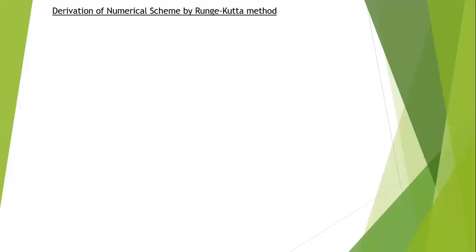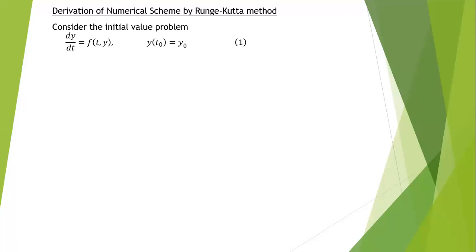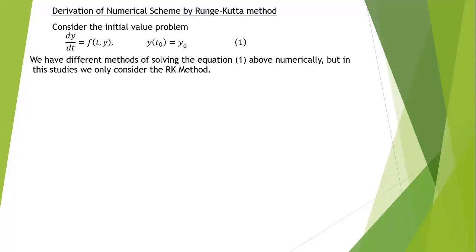I want to look at the derivation of a numerical scheme by the Runge-Kutta method. The differential equation can be solved numerically by many methods. But let's consider the initial value problem: dy/dt equals f(t, y), with y(t₀) equals y₀. We have different methods of solving this equation numerically, but in this study we only consider the Runge-Kutta method.